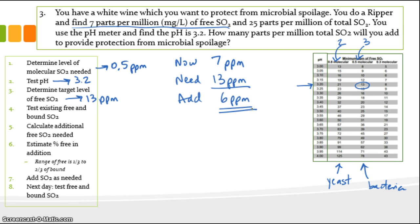So again, then, let's just go on. So we already tested the existing free and bound. We'd done our ripper. So the additional SO2 needed is our 6 parts per million, and the percent free in addition. So let's estimate that 66% will be free or two-thirds. And then we'd have to calculate our total to add. And again, it would just be our addition times 0.66. Our fraction that will become free equals the free that we need, 6 parts per million.